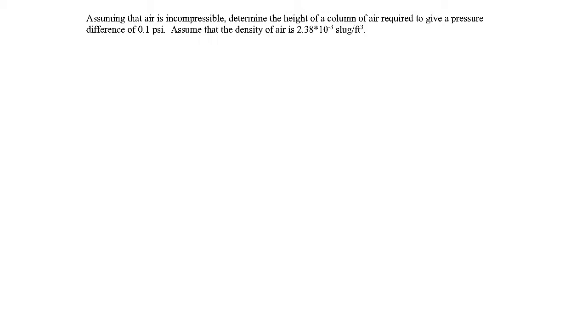In this example, we're told to assume that air is incompressible, and we're asked to find the height of a column of air required to give a pressure difference of 0.1 psi.